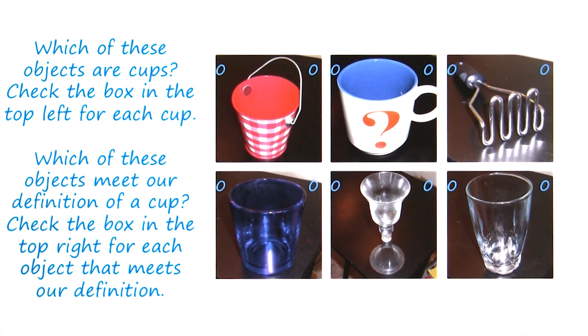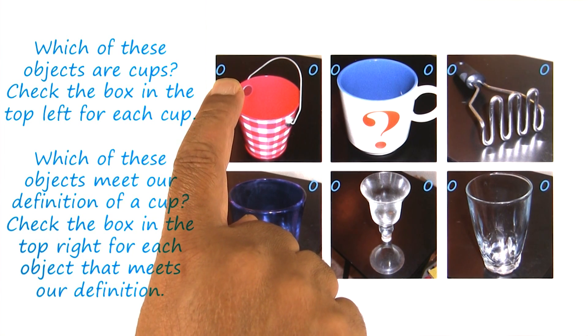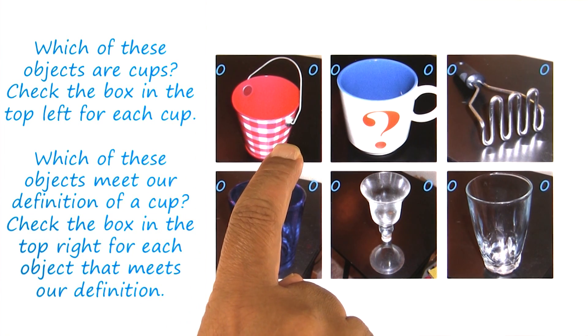The first question is, which of these objects do you think is a cup? Mark the button on the top left if you think that a particular object is a cup.